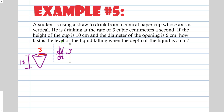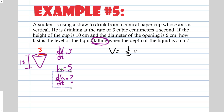The height of the liquid is 5 centimeters, and we want to find how fast the height is falling, so we need dh/dt. Since it's falling, our answer should be negative. Volume equals (1/3)πr²h. I have the height and the derivative of height and derivative of volume, but not the radius or its derivative, so I need to substitute and get rid of r.